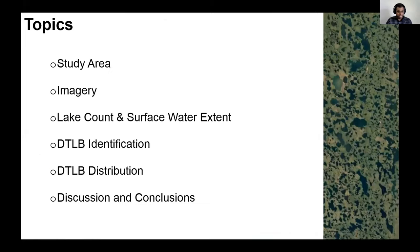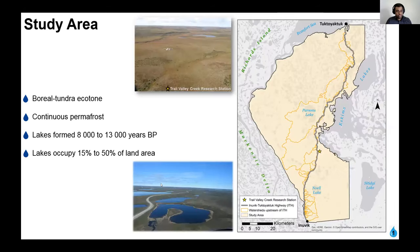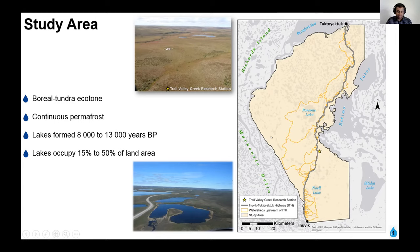Welcome everyone. Today I'll be talking about drain thaw lake basins in the Inuvik-Tuktoyaktuk region, and a spatial temporal analysis of lakes in this region. Topics include looking at the study area and imagery used, two main parts of the study — a lake inventory and identifying and assessing the distribution of drain thaw lake basins — followed by discussion and conclusions. The study area is a boreal tundra ecotone with continuous permafrost, lakes formed within the last 8,000 to 13,000 years before present, covering approximately 3,000 square kilometers, with 15 to 50% of land area covered by lakes.